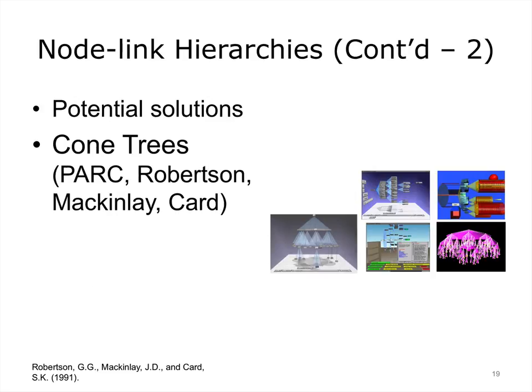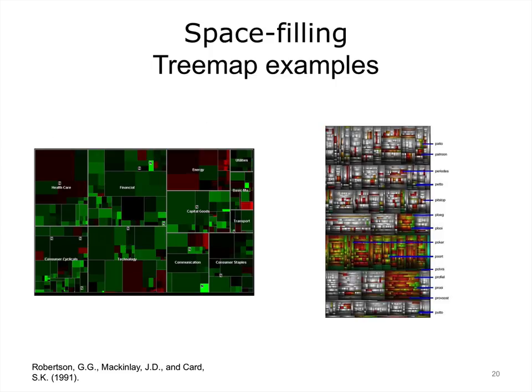Here are some examples of node-link hierarchies. An alternative approach to representing hierarchical data is space-filling. Smart Money is a popular example of this approach. In Smart Money, high-level categories are represented as rectangles that fill the main space. As these categories are divided into lower-level ones, so are the rectangles.